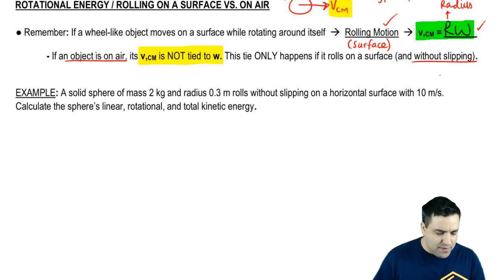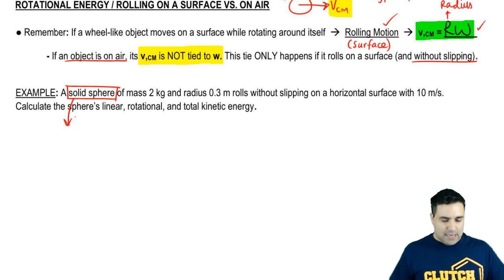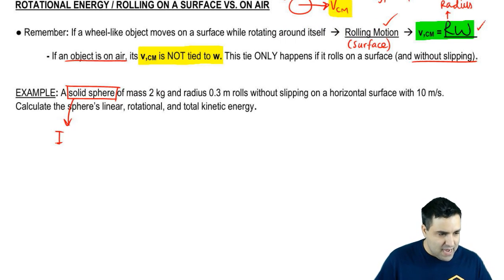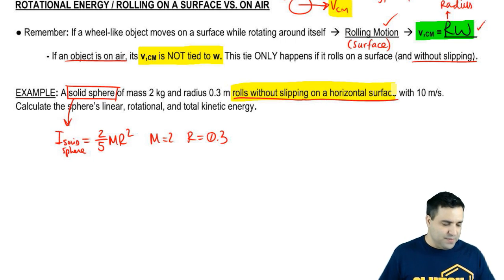That's it. So let's do an example here. I have a solid sphere. This is the type of shape I have. So that's going to tell me the moment of inertia. I of a solid sphere, I have it here. I of a solid sphere is 2 over 5 mR squared. And I'm told that the mass is 2, the radius is 0.3, and it rolls without slipping on a horizontal surface. Roll without slipping on a horizontal surface means that this is called rolling motion.